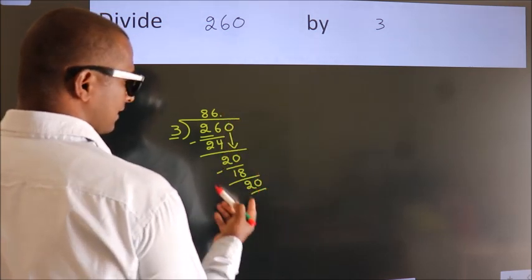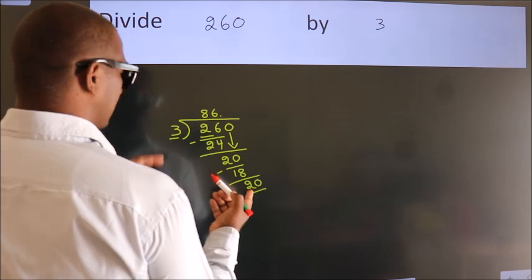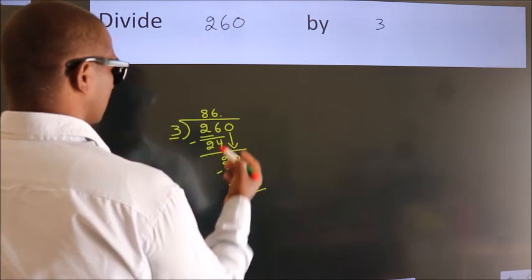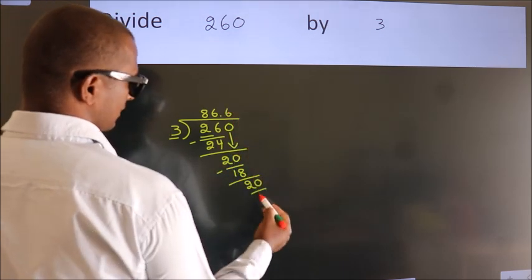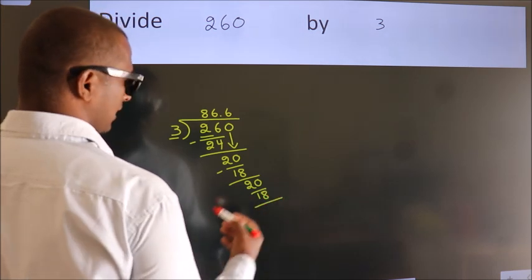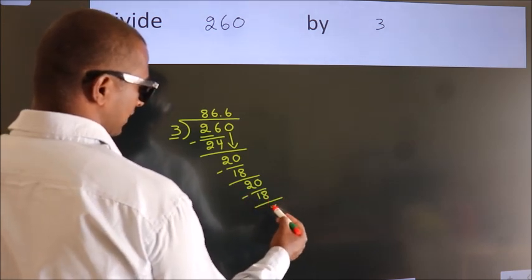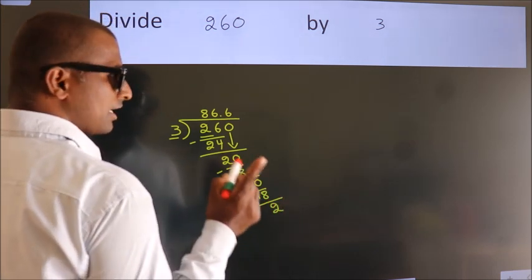So, 20. A number close to 20 in the 3 table is 3 times 6, which is 18. Now we subtract.